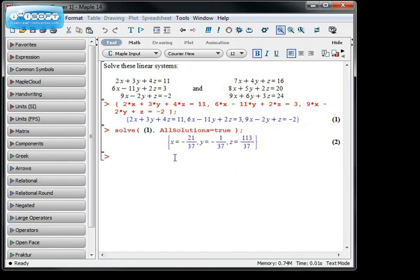and it tells me that the solutions are x equals negative 21/37, y equals negative 1/37, and z equals 113/37, which is precisely what we found last time.